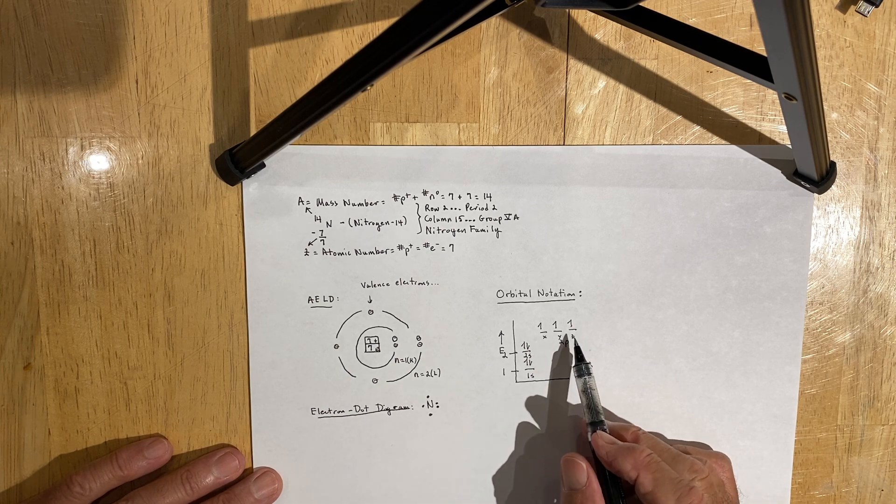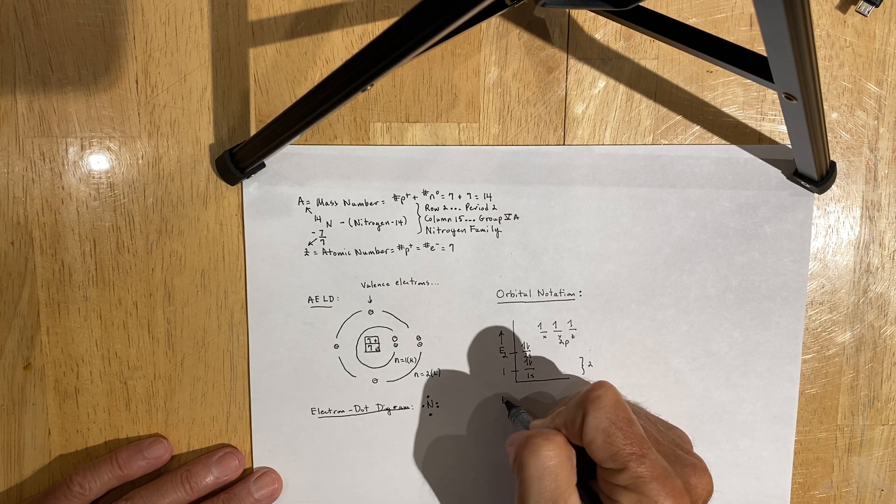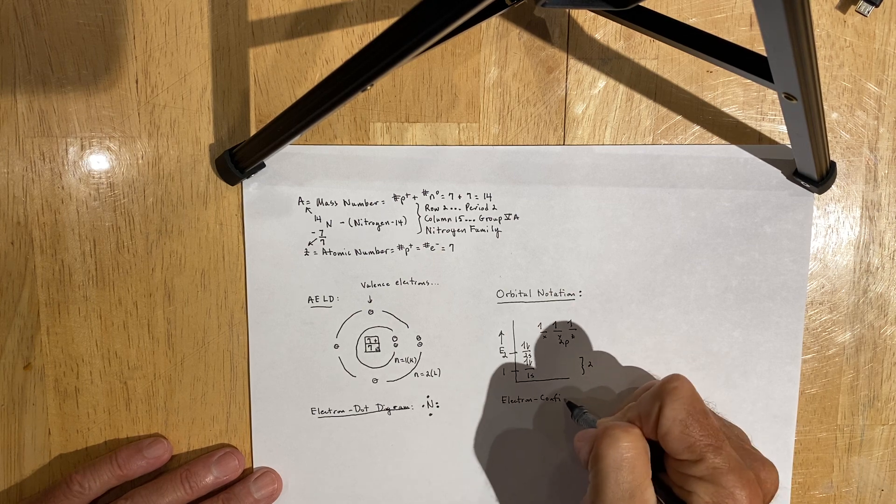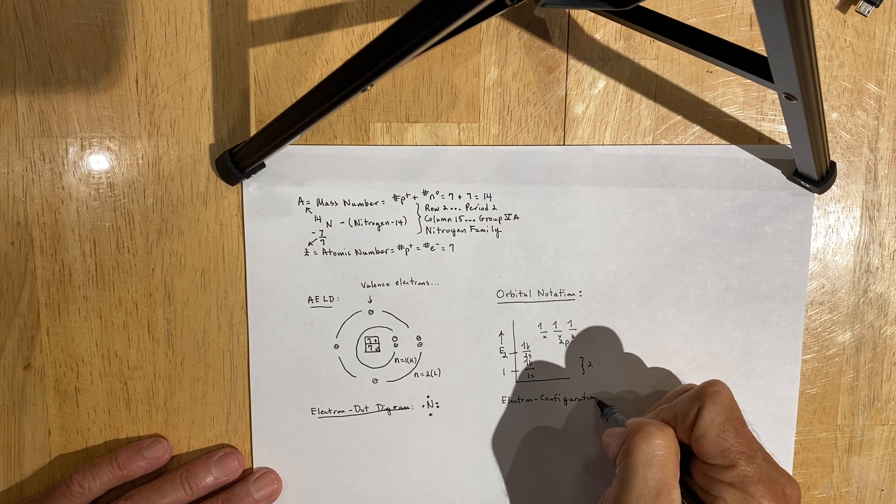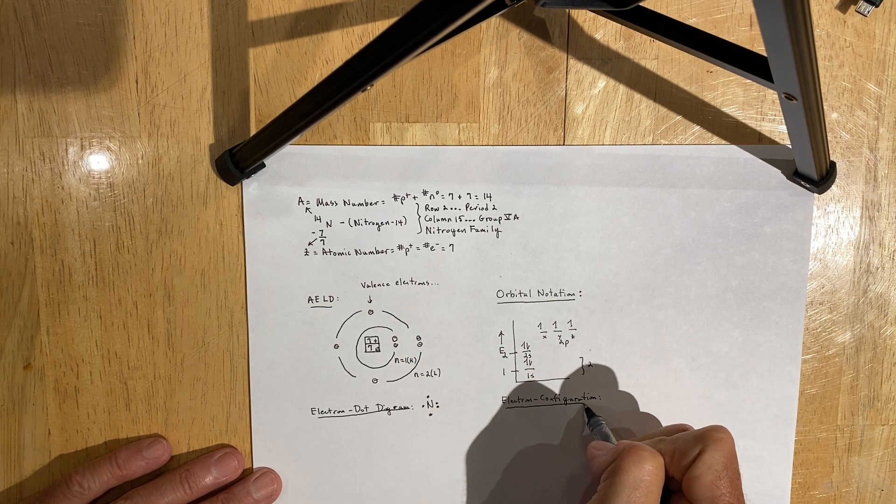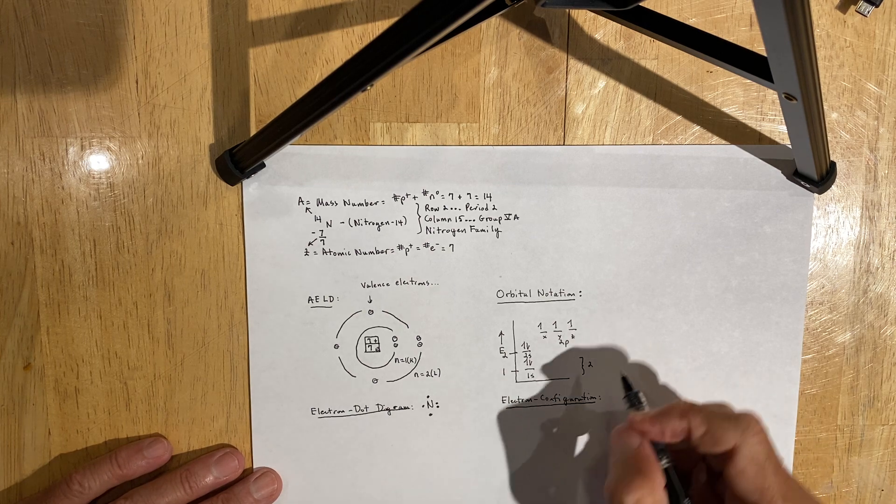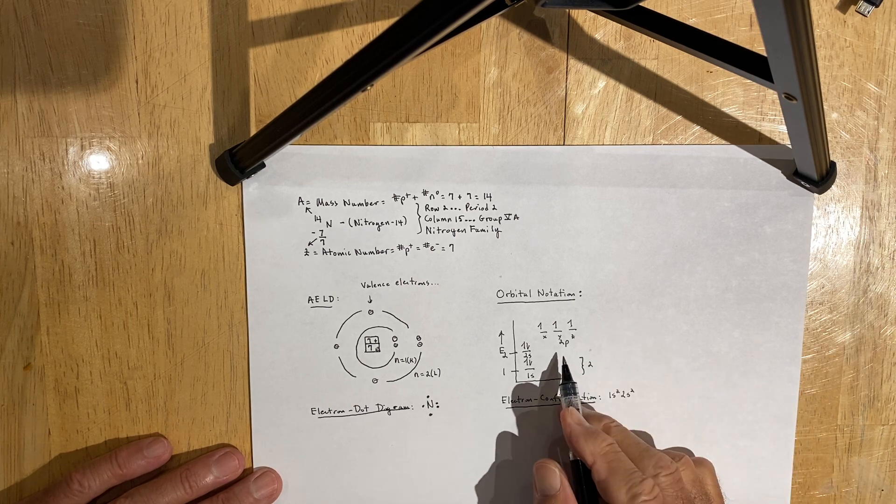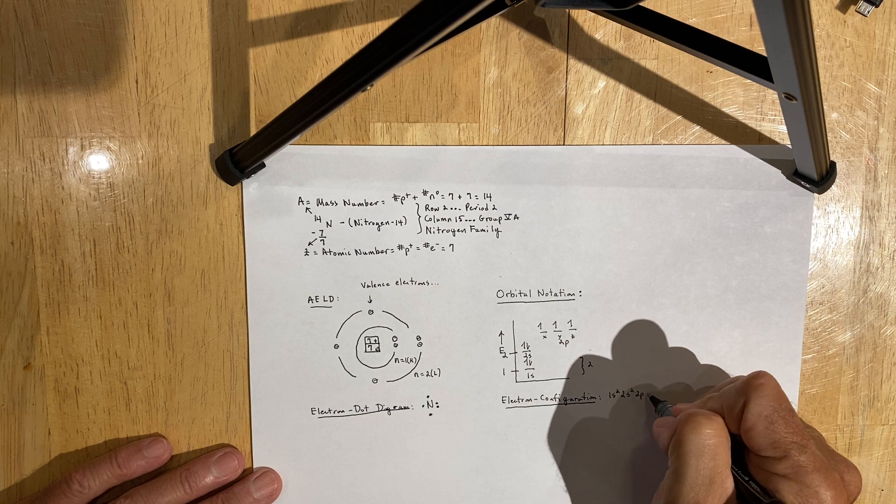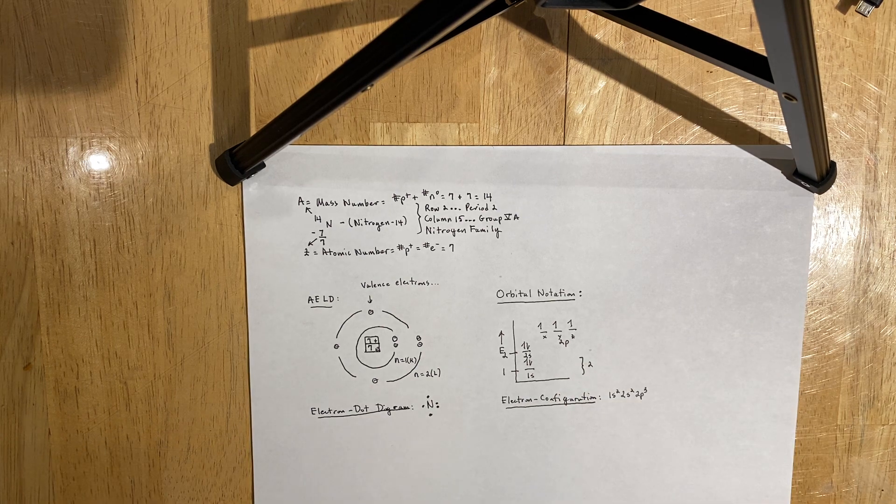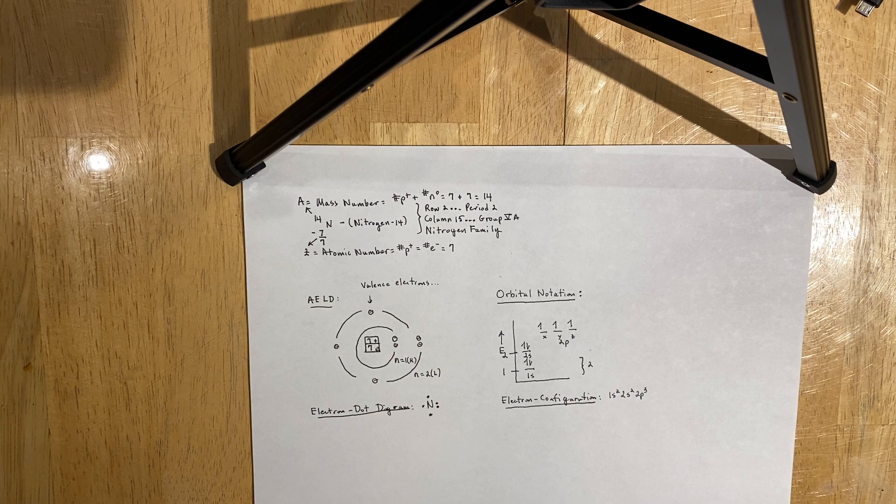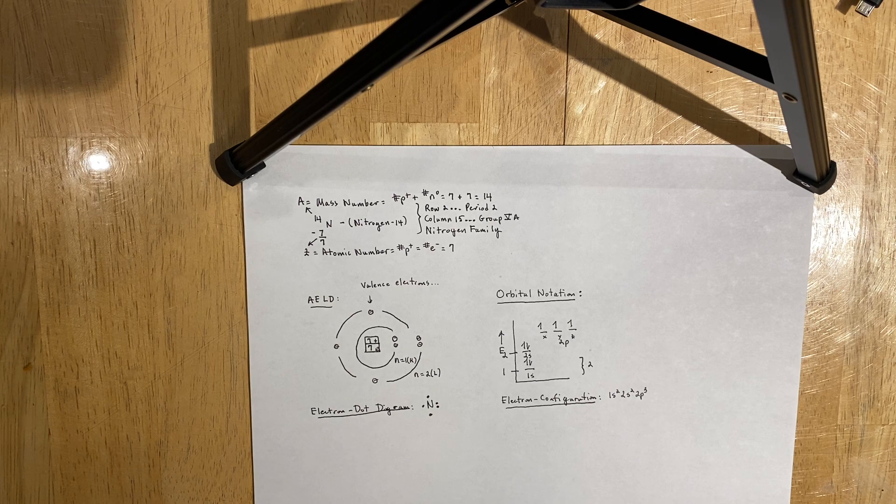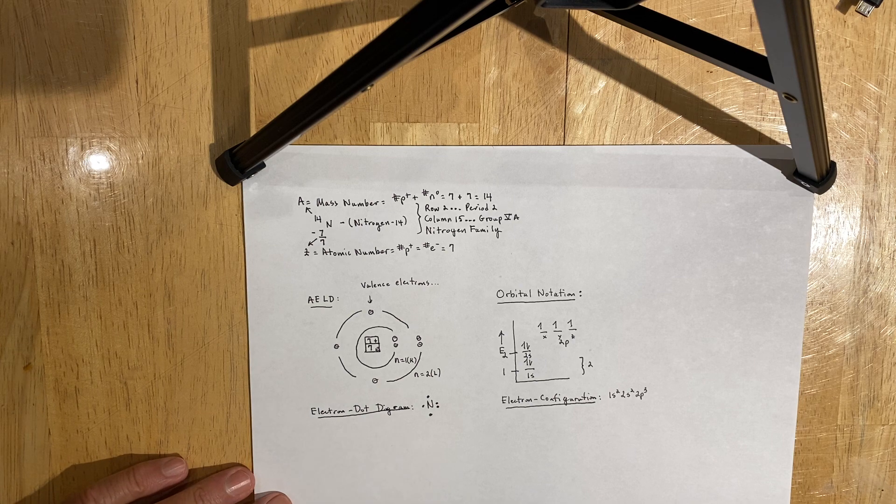If we were to write the address of the valence electrons, we would do that using what's called electron configuration, which is noted on the periodic table. So the electron configuration of nitrogen would be written in this way: 1s2, practice with me, 2s2, and then 2p3. And you can see if you total up the superscripts, they sum to the atomic number. So by examining the electron configuration, you should be able to identify what element is represented by that electron configuration.